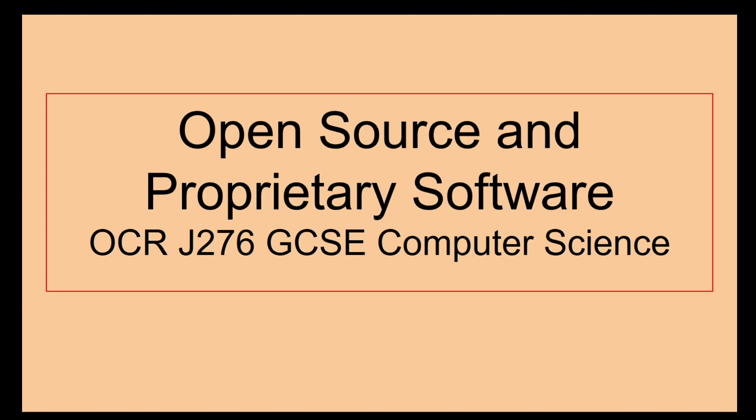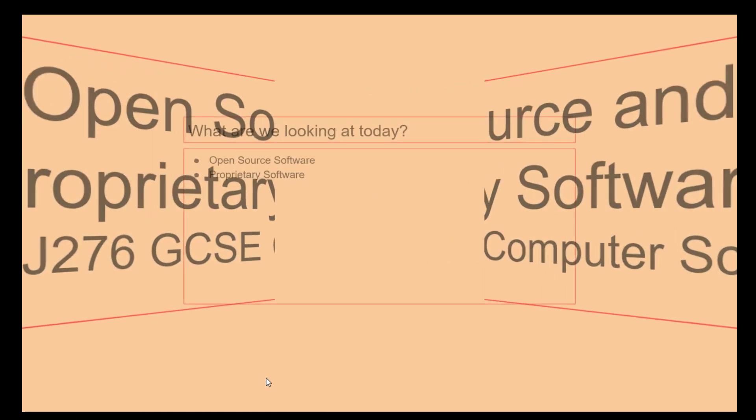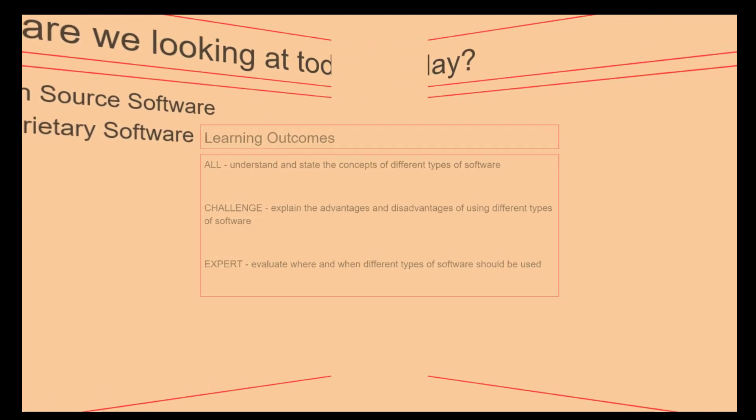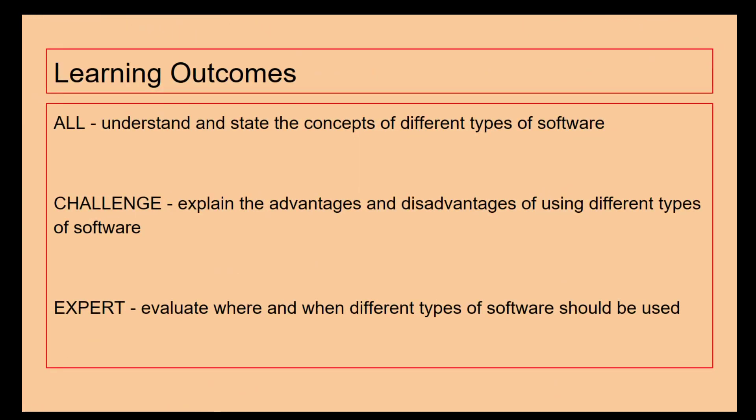Hello there. What we are looking at today is open source and proprietary software as part of the OCR J276 GCSE Computer Science specification. So today we are focusing on open source software and proprietary software.